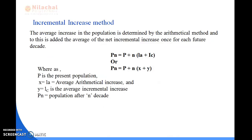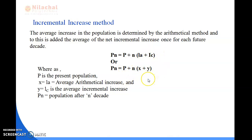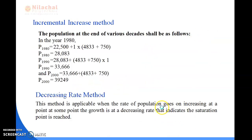Next is the incremental increasing method. This method is applied by first determining using the arithmetical method and then adding the average of the net incremental increase once for each decade. The formula is: Pn = P + n × (Ia + Ic), or Pn = P + n × (x̄ + ȳ), where Ia is the average arithmetical increase and Ic is the average incremental increase.